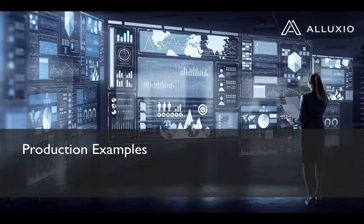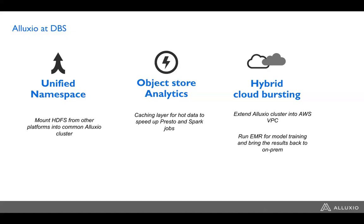Let's look at a few examples. The Development Bank of Singapore (DBS) is a large bank leveraging Alluxio for several things: a unified namespace across multiple data stores and HDFS clusters, data stored in S3, and making all of this data transparently accessible to their applications. They also leverage it for object stores — a great way to store large amounts of data scalably.